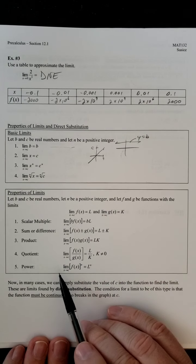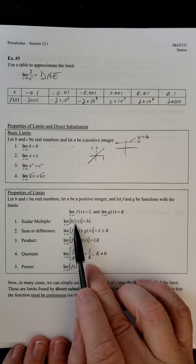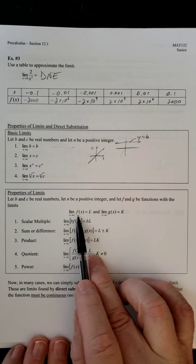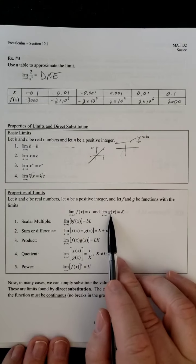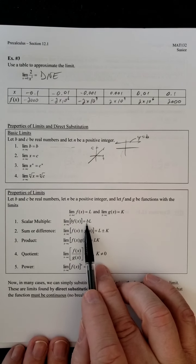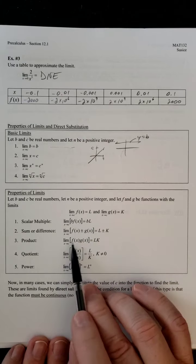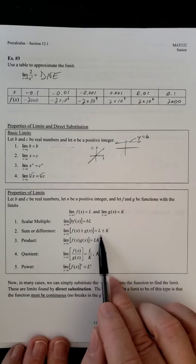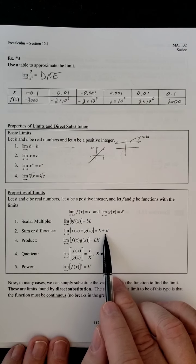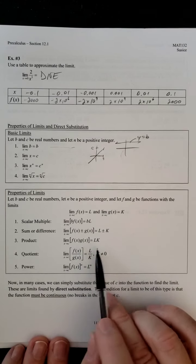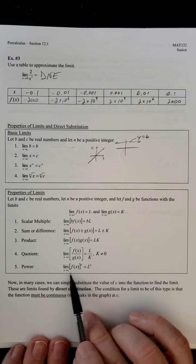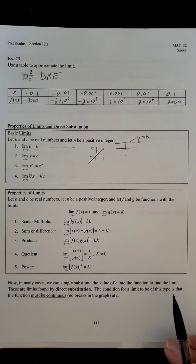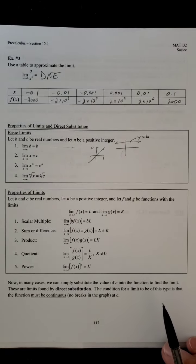And then some other properties of limits. If we have a constant times a function, we can just multiply the constant times the limit. If the limit of f of x is equal to l, the limit of g of x is equal to k, so we can just multiply the constant times the limit. Same thing here. If we're adding or subtracting two functions, and we're taking the limit, the limits could be the sum or the difference of those actual limits. Product gives us the product. Quotient will give us the quotient. Power will give us the power. So, again, very straightforward properties that we can see with limits.